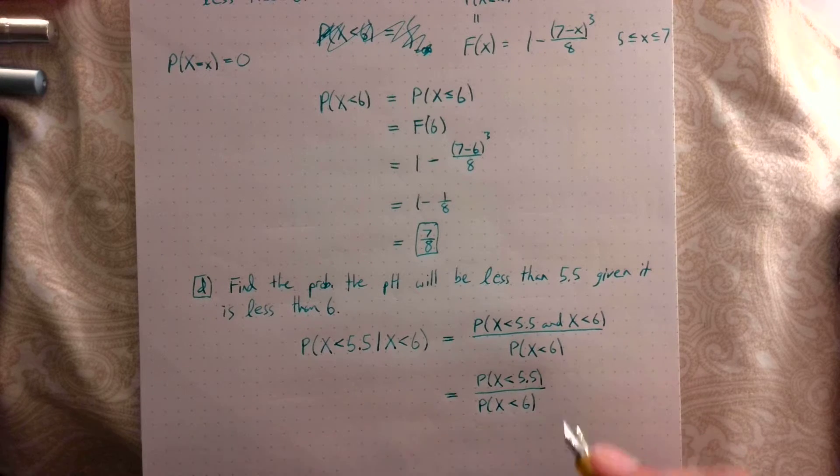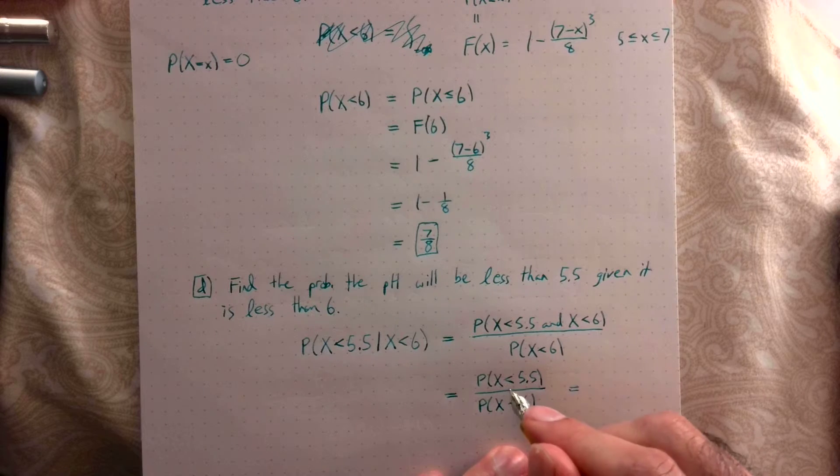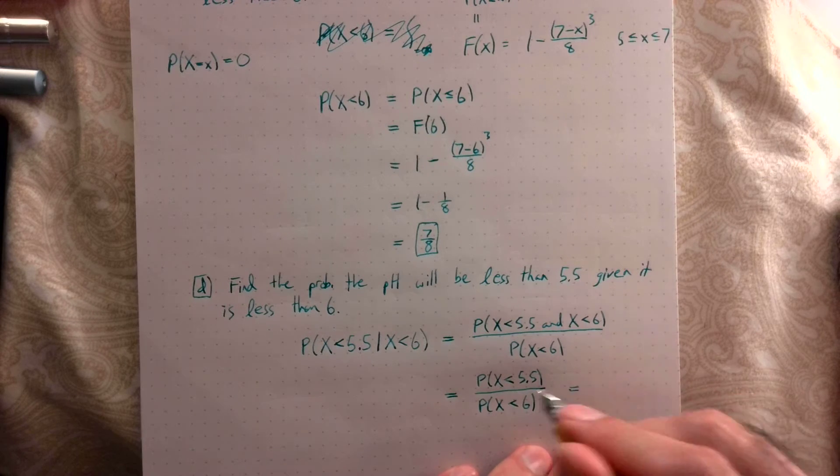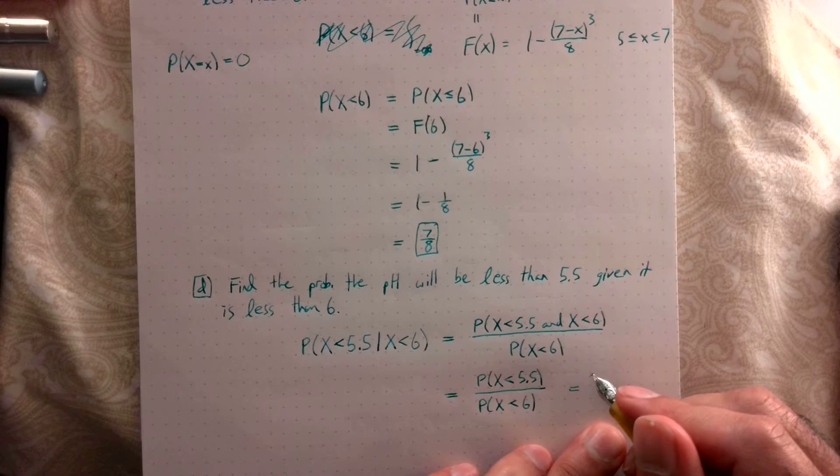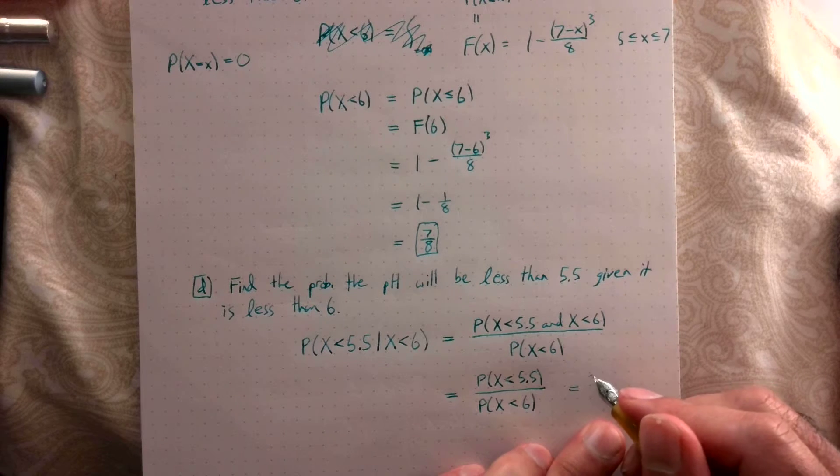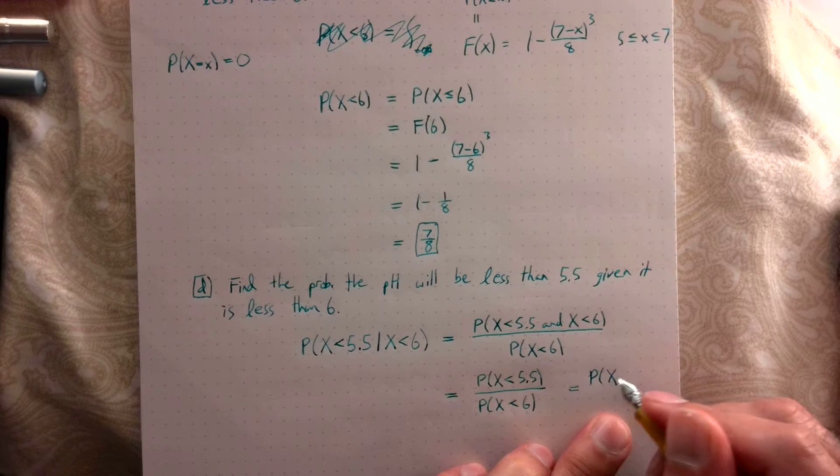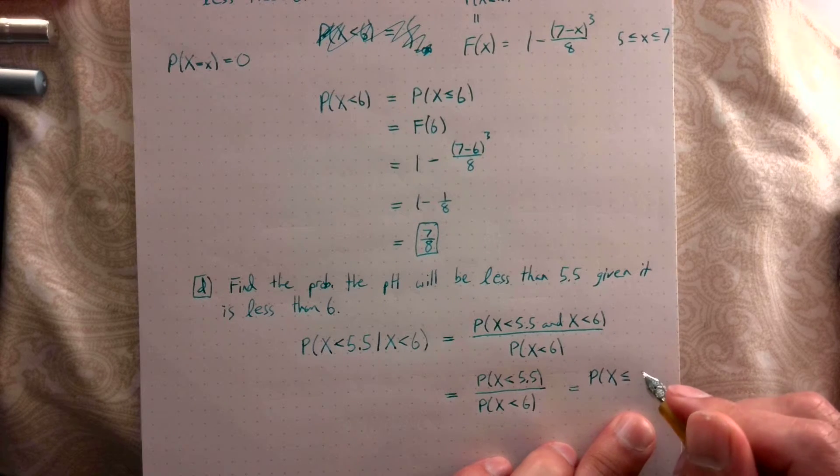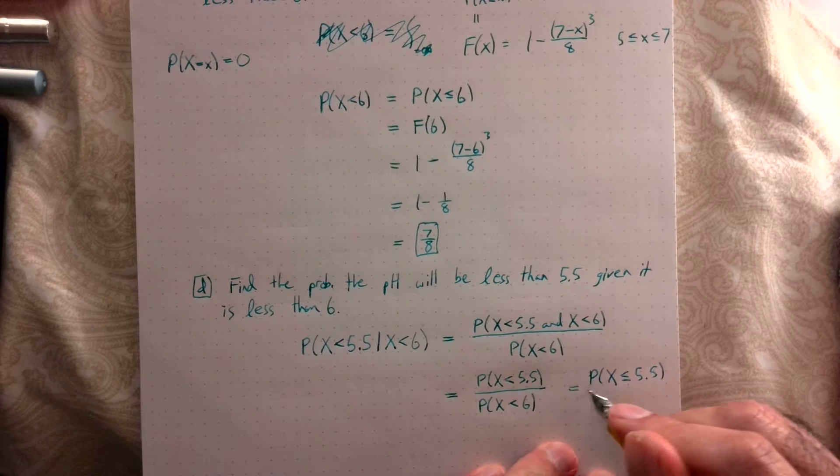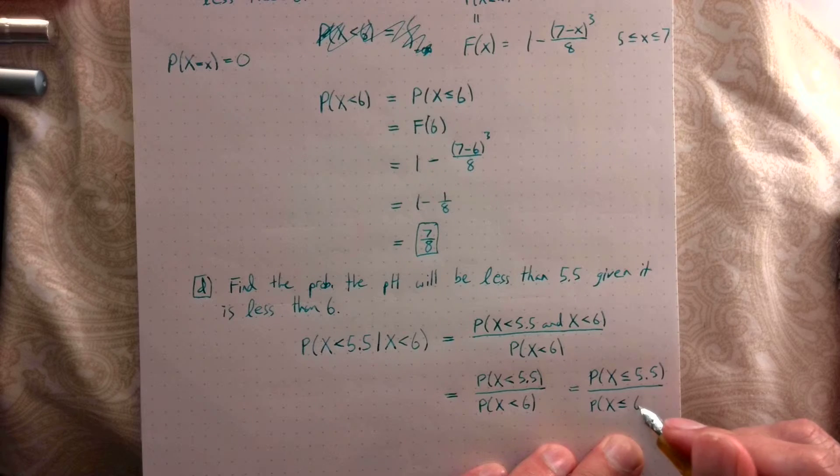And remember, because this is a continuous random variable, less than or less than or equal to is going to be the same, because the probability that X equals either one of these is always 0. So this is the probability that X is less than or equal to 5.5, over the probability that X is less than or equal to 6.